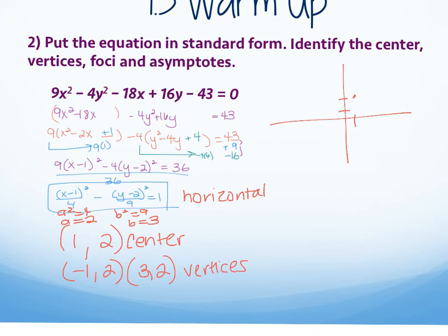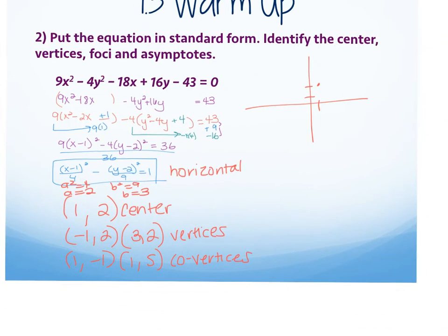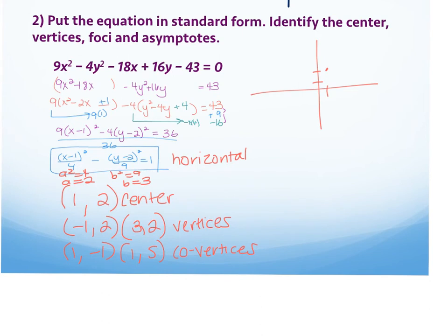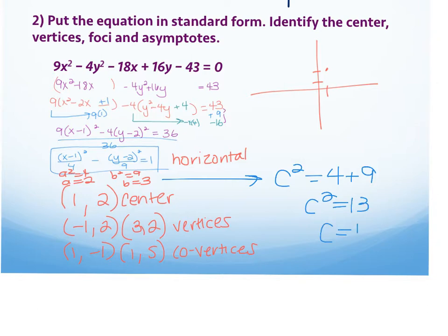Since b squared is 9, b is 3. Vertices are at negative 1, 2 and 3, 2 — adding and subtracting 2 from the x-coordinate of the center. For the covertices I go up and down b from the center: 1, negative 1 and 1, 5. For the foci, c squared equals a squared plus b squared equals 13, so c equals the square root of 13. The foci are at 1 plus or minus square root of 13, comma 2.